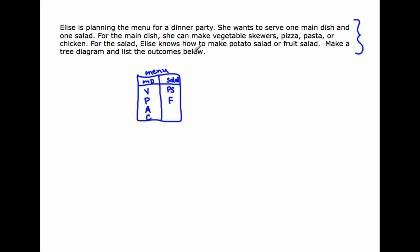Make a tree diagram and list the outcomes below. She wants to serve one main dish and one salad. Here's how you make your tree diagram: go to your first event, which is main dishes. How many outcomes do you have there? Four. List them in your tree diagram — V, P, A, C — and we know what these letters stand for.